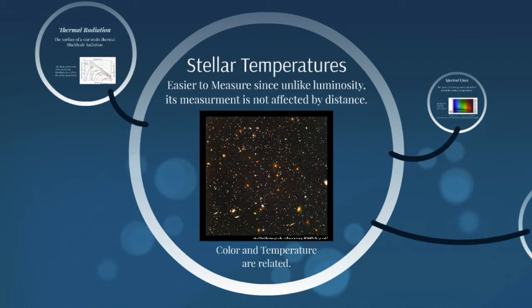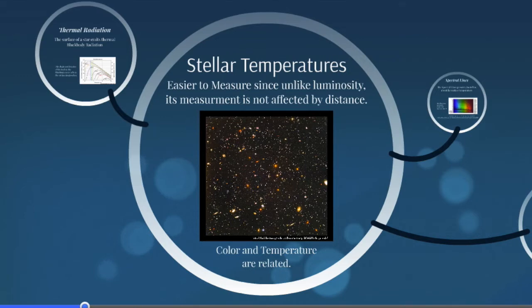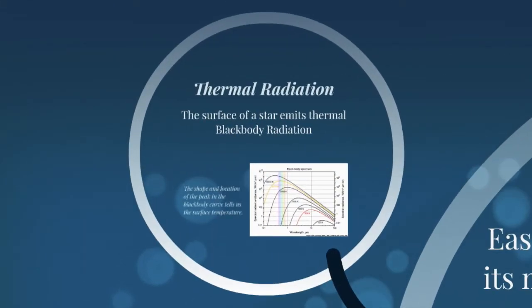And this is easier to measure than luminosity because it doesn't depend how far away the star is. So we find that the color and the temperature are related. Just like looking at a fire, you're going to find that the red coals are not as hot as the blue coals or the blue flame. And the white flame is even hotter yet. So the color that you observe tells you something about the temperature.